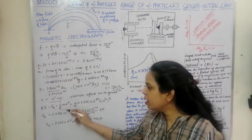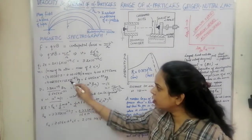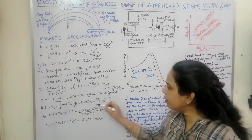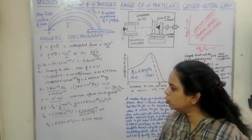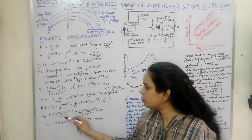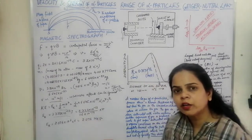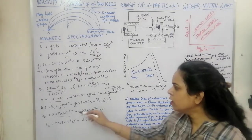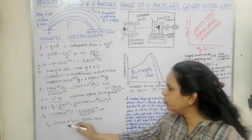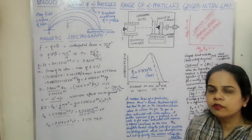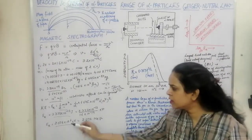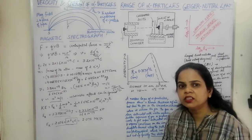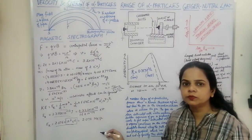Kinetic energy is given by KE = ½MV². Substituting the values of mass and velocity, the energy is 3.322×10⁻¹³ joules. Converting to electron volts by dividing by 1.6×10⁻¹⁹, we get 2.076×10⁶ eV, which equals 2.076 MeV.